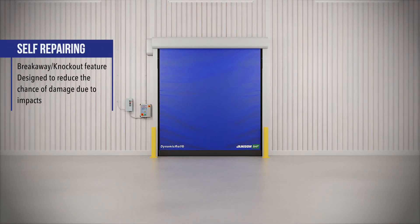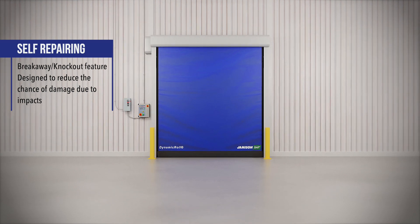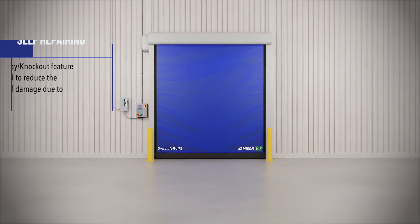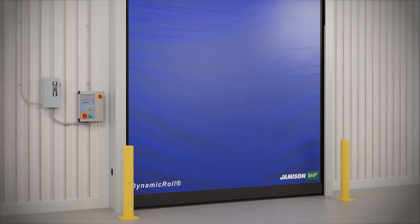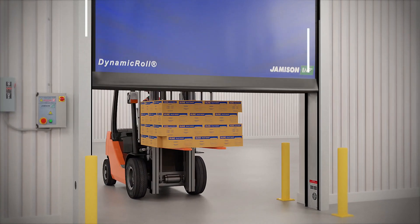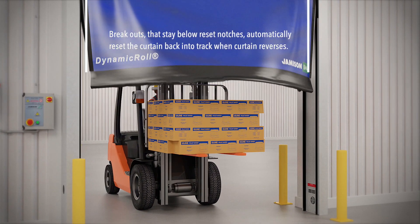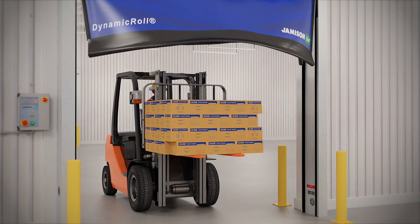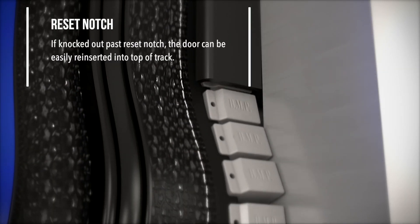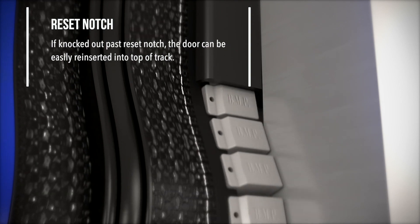The breakaway feature is designed to reduce the chance of damage due to accidental impact. If the impact knocks out the curtain below the reset notches at the top, the curtain will break away from the edges and automatically roll back into the track as the curtain reverses.